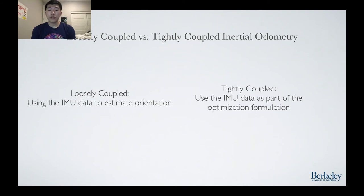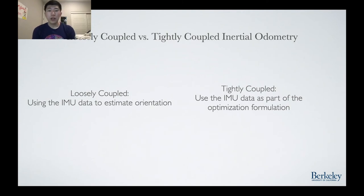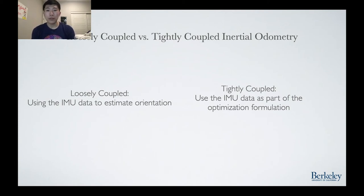Modern SLAM research focuses on inertial SLAM. Visual-inertial SLAMs can be divided into two separate classes: loosely coupled and tightly coupled systems. Loosely coupled inertial systems use the IMU data to simply estimate orientation and pose — for example, using the direction of gravity as a heuristic. Tightly coupled inertial systems add the IMU data as part of the optimization formulation itself. Modern research has leaned towards a tightly coupled SLAM solution for better results.